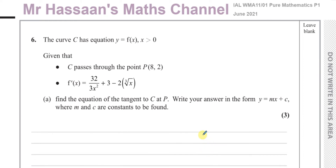Welcome back, this is Mr. Hassan's Maths channel. I'm answering question 6 from the International A-level Pure Mathematics P1 June 2021 exam. This question tells us about a curve with equation y = f(x) where x > 0. The curve C passes through the point P(8, 2), and the first derivative (gradient function) of the curve is 32 divided by 3x squared, plus 3 minus 2 times the cube root of x.